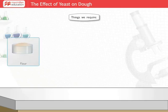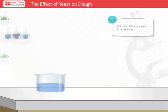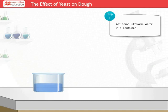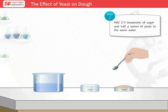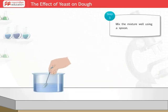For conducting this experiment we need flour, sugar, a large container with warm water, and yeast powder. Let's get started. Begin by taking some lukewarm water in a large container — this is the most favorable temperature for keeping the yeast active. Now add a few teaspoons of sugar and half a teaspoon of yeast powder into the warm water.